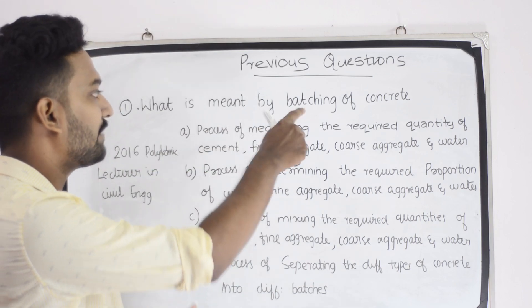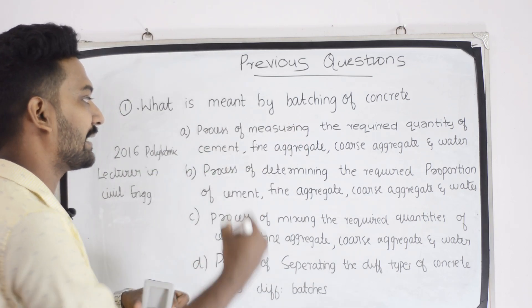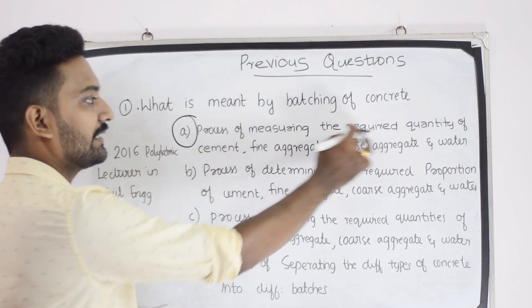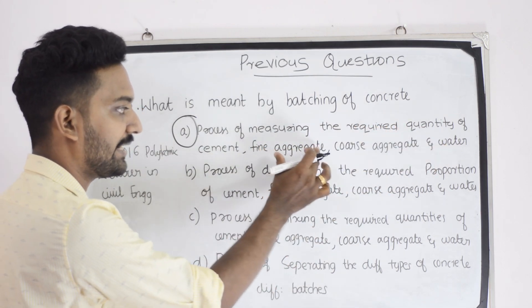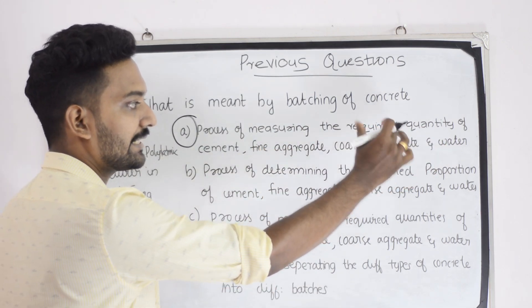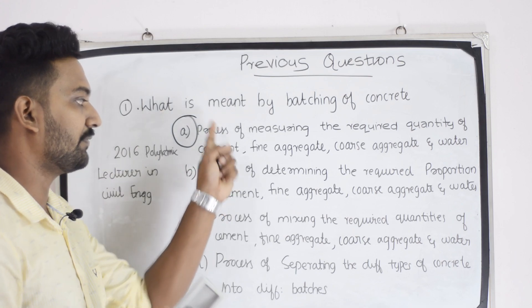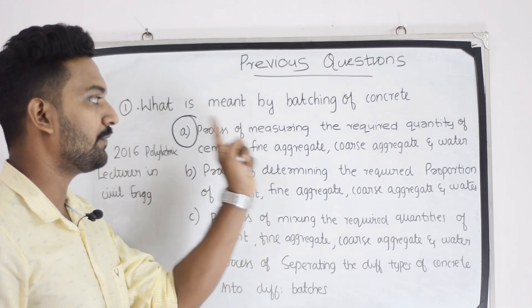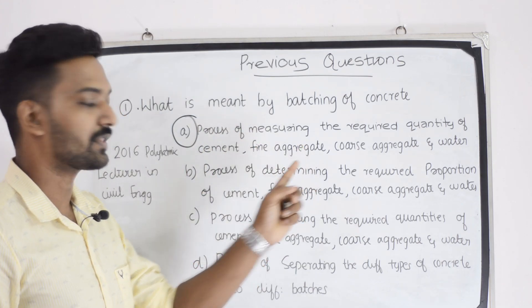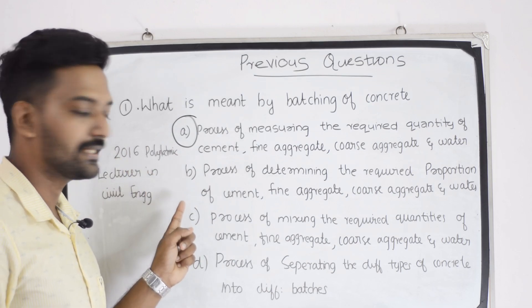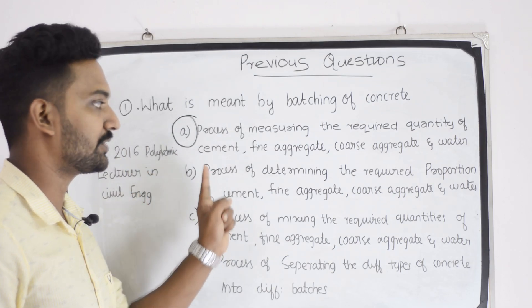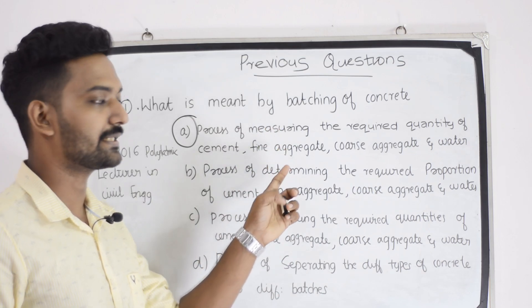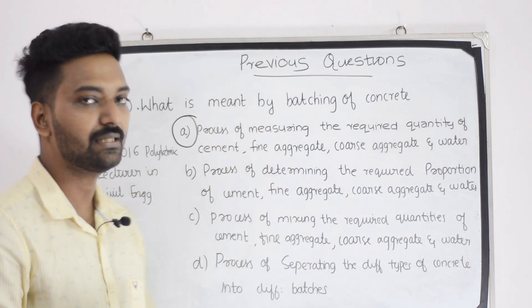What is the meaning of the batching of concrete? The answer is the process of measuring the required quantity of cement, fine aggregate, coarse aggregate and water. So, the process of measuring — that is the correct answer. Let's go to the second question.